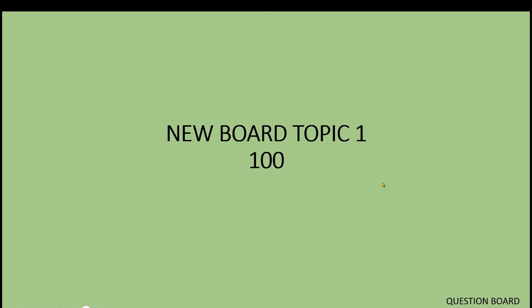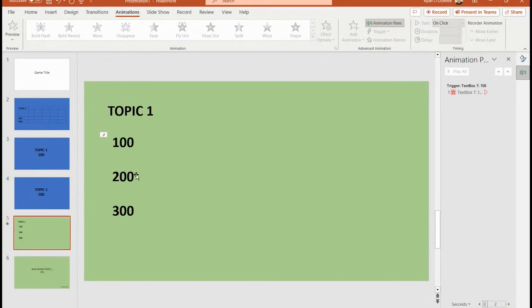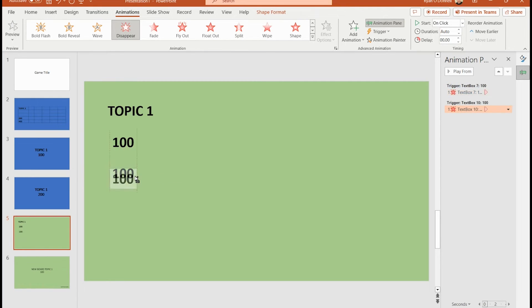Click OK. Now in presentation mode, clicking 100 simultaneously links you to the question and disappears the text box. It happened so fast because it hyperlinked. When you return to the board, the option is completely gone — unlike the color camouflage method where you could still see the pointer finger hovering. This is a true removal.